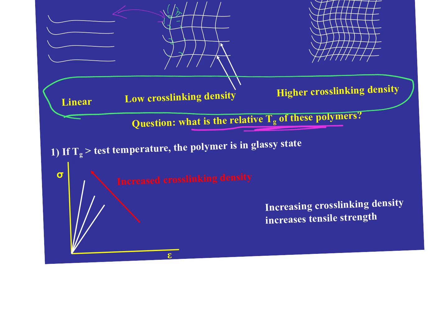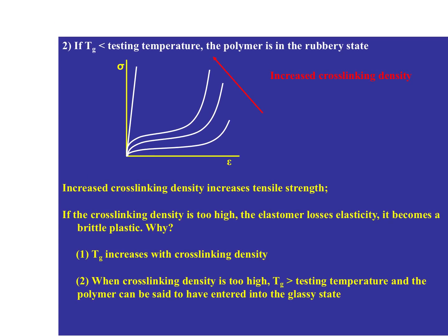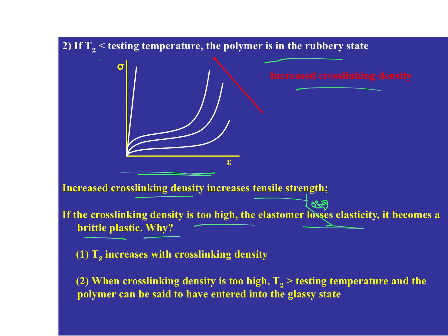Increased crosslink density increases tensile strength. If crosslink density is too high, the polymer loses elasticity and becomes a brittle plastic. Whether 'too high' depends on the application — for a structural airplane part you want higher crosslink density and load-bearing ability, but the payment is in the transverse direction properties. A highly crosslinked thermoset matrix can be very strong in the fiber direction but brittle when struck from the wrong direction, as with polymer composite aircraft wings.